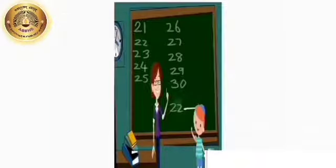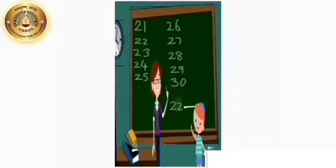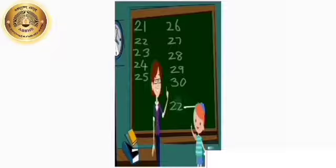Here we have a teacher and a student. Let's take an example — number 22 is already given. Let's count the numbers from 21 to 30 and find out which number comes after number 22. Let's start: 21, 22, 23, 24, 25, 26, 27, 28, 29 and number 30. Number 22 is already given. Tell me, children, which number comes after number 22? Yes, it is number 23.